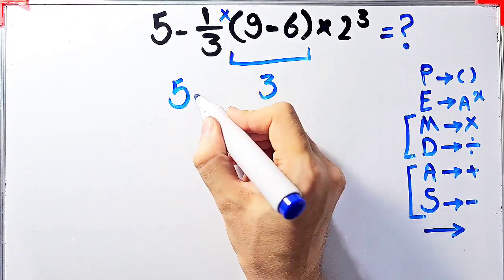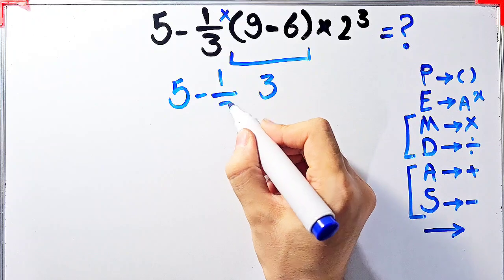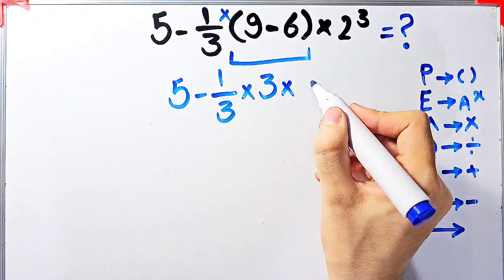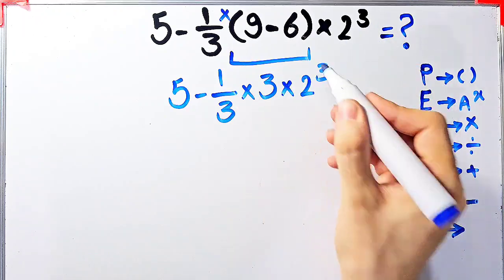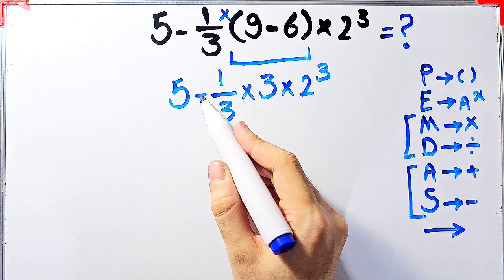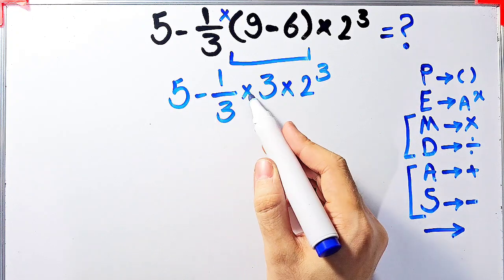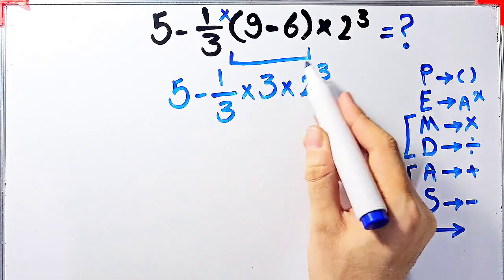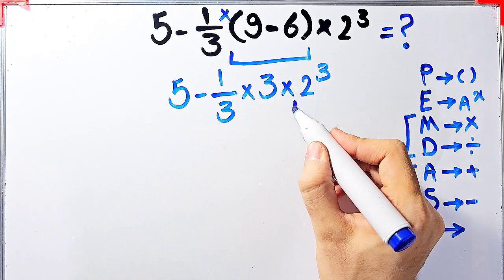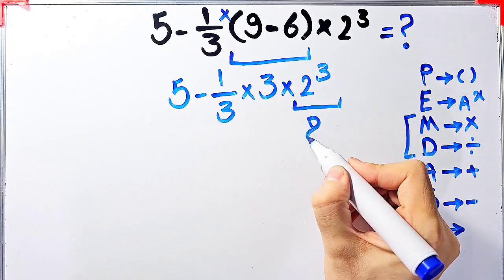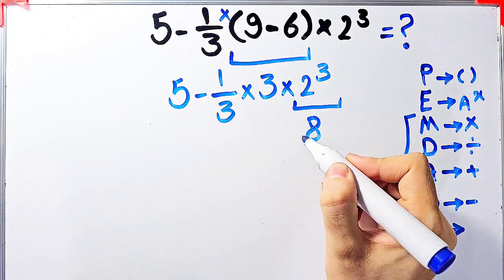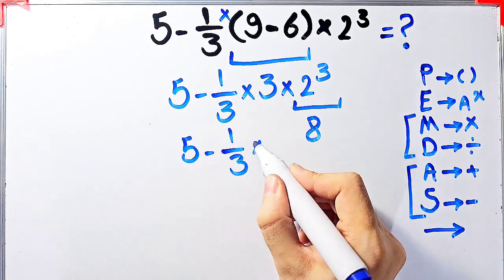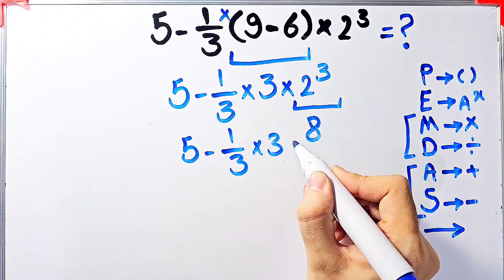Now the question is 5 minus 1 over 3 times 3, then times 2 to the power of 3. Now we have subtraction, multiplication, and exponent. First, we simplify this exponent. 2 to the power of 3 equals 8. Now the question is 5 minus 1 over 3, then times 3, then times 8.